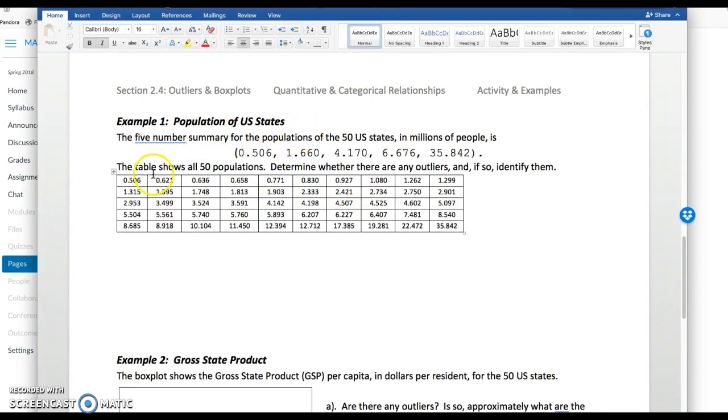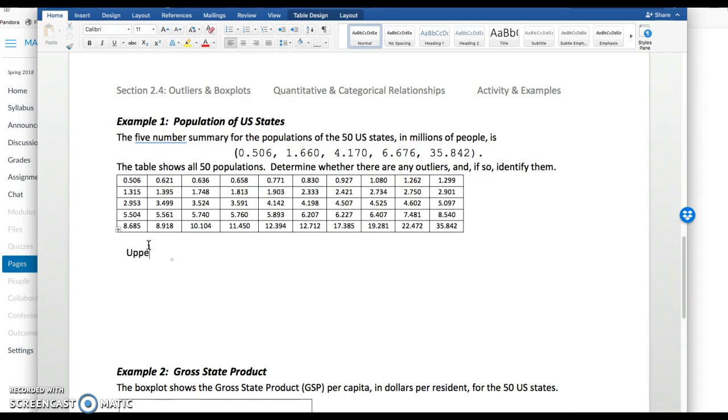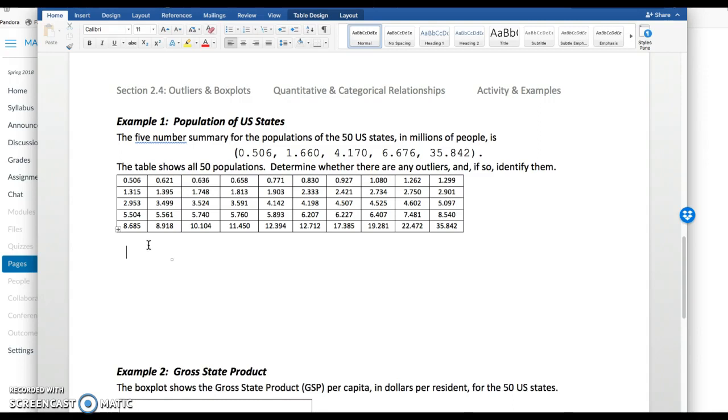Example one, we've got a population of all 50 U.S. states listed in ascending order here in this table. So we have 35 million, that's California, and then half a million, I'm guessing Wyoming or Alaska, and all the states in between. You want to determine whether there are any outliers, and if so, to identify them. One way to do that would be to input all this data into StatKey or some other software program and make a box plot. I'm going to use the outlier formulas to answer this question.